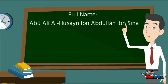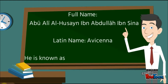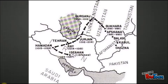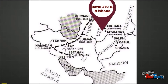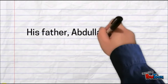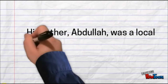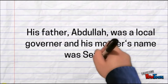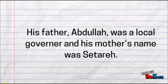Ibn Sina was born in Afshanah. He lived in the city of Bukhara in 370 Hijri. He died in 428 Hijri in Hamadan, Persia, at the age of 57 years old. His father, Abdullah, was a local governor, and his mother's name was Setariq.